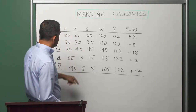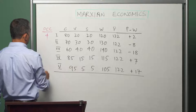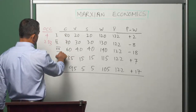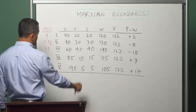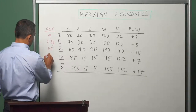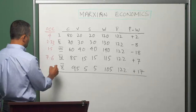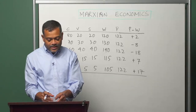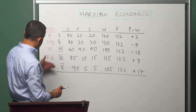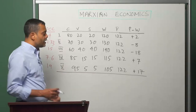The constant capital as a ratio of variable capital is the organic composition of capital. The organic composition for sector 1 is 4, for sector 2 is 7/3 which is 2.33, for sector 3 it is 60/40 which is 1.5, for sector 4 it is 85/15 which is approximately 7.6, and for sector 5 it is 95/5 which is 19. We can see that the organic composition of capital varies across sectors, and we can divide sectors into those with high and low organic composition.